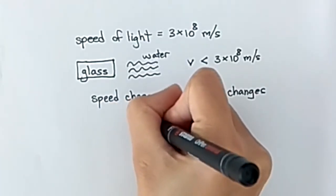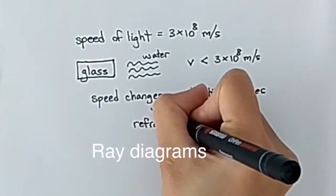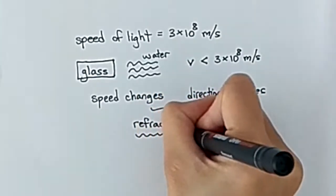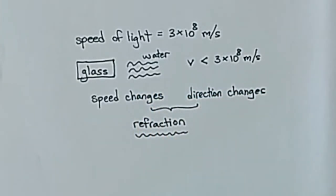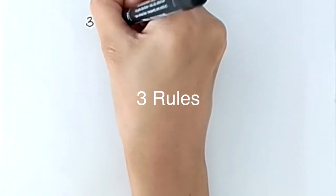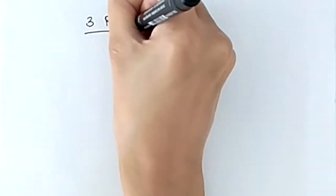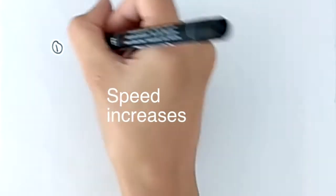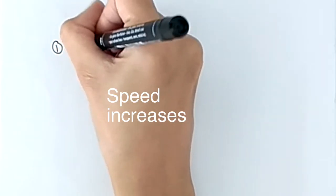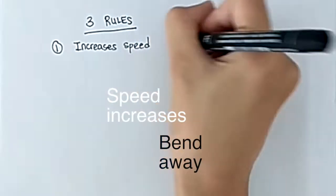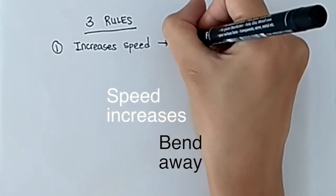In your GCSE exam, you are expected to know how to draw ray diagrams for refraction. There are 3 rules that you need to follow. If the speed of the wave increases as it goes through the material, the wave is going to refract or bend away from the normal.